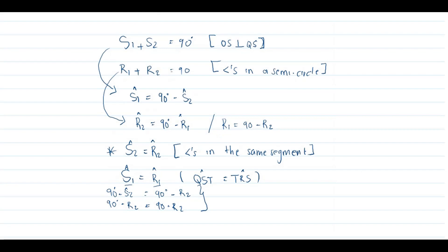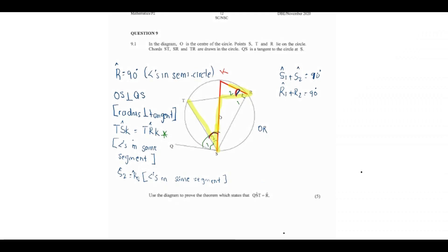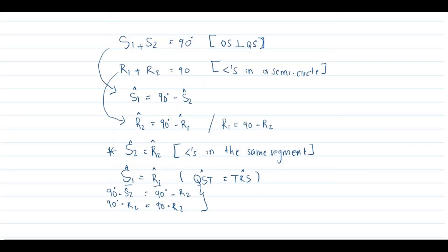We have now proven the theorem. Therefore angle QST equals angle TRS, according to the tan-chord theorem. That's the final statement and we are done.